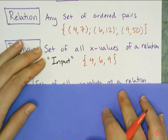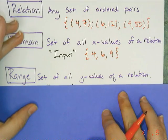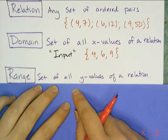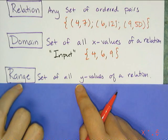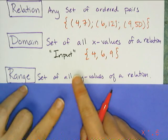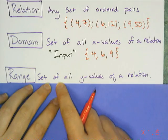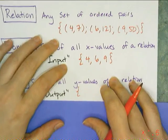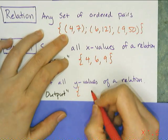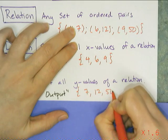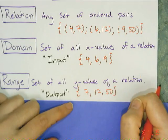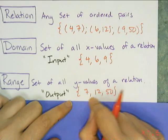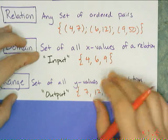Another word I need is range. You might already have a definition of range from statistics — the difference between the highest and lowest value in a data set. But that's statistics range. In algebra, range is the set of all y values of a relation, and we consider those as output values in the context of a function. So the range of this relation is all the y values: 7, 12, and 50. Like the domain, repeated values are only listed once. With these three words combined, I can get the definition of a function.